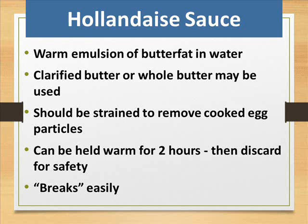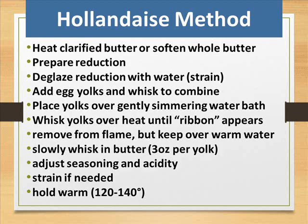Hollandaise sauce is a warm emulsion of butterfat in water. Clarified butter or whole butter may be used, and the sauce should be strained to remove cooked egg particles. Method: heat clarified butter or soften whole butter, prepare a reduction, deglaze the reduction with water and strain. Add egg yolks and whisk to combine. Place yolks over gently simmering water bath. Whisk yolks over heat until a ribbon appears. Remove from flame but keep over warm water. Slowly whisk in butter — 3 ounces per yolk. Adjust seasoning and acidity. Strain if needed.